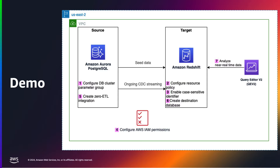There are several prerequisites to fulfill in order to set up the Zero ETL integration. First, configure the Aurora PostgreSQL source with a customized DB cluster parameter group. Second, configure the Amazon Redshift Serverless destination with the required resource policy for its namespace. Third, update the Redshift Serverless workgroup to enable case-sensitive identifiers. And finally, configure the required IAM permissions.